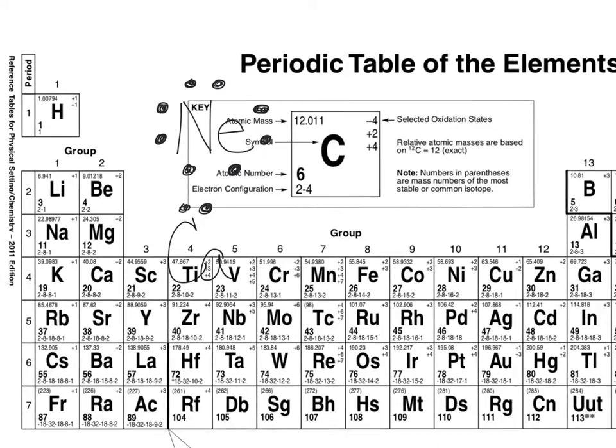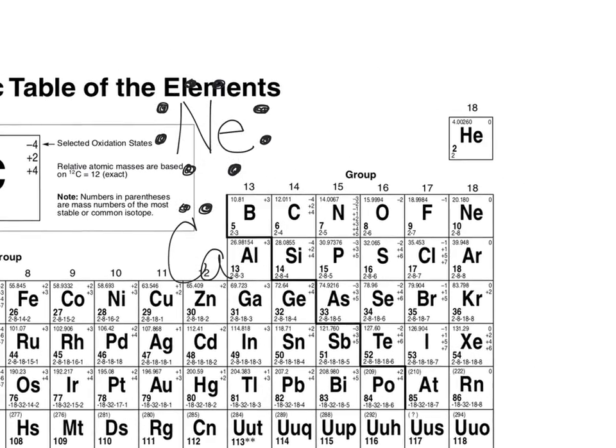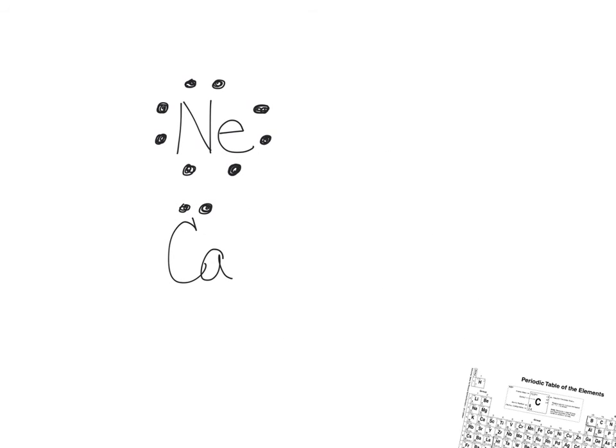Let's do another one, but this time a nonmetal. Let's do nitrogen, whose valence number is 5. The first two electrons go on top—those are the ones in s—and then number 3, 4, and 5.